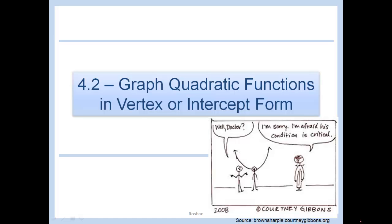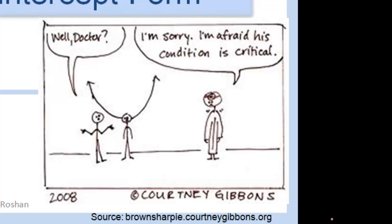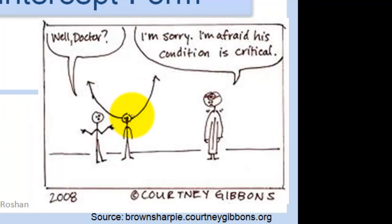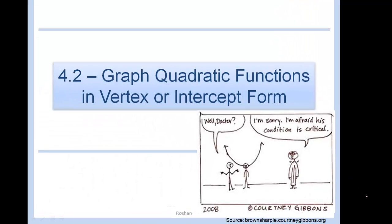4.2 graph quadratic functions in vertex or intercept form. This vertex is what our parabola is symmetric over. This is called our vertex right here, and that's what we'll be talking a lot about in this lesson.